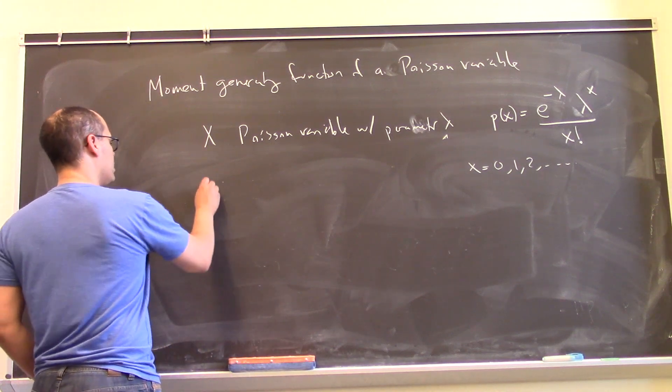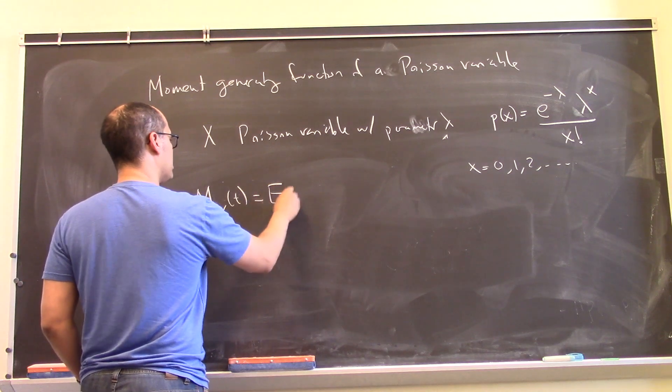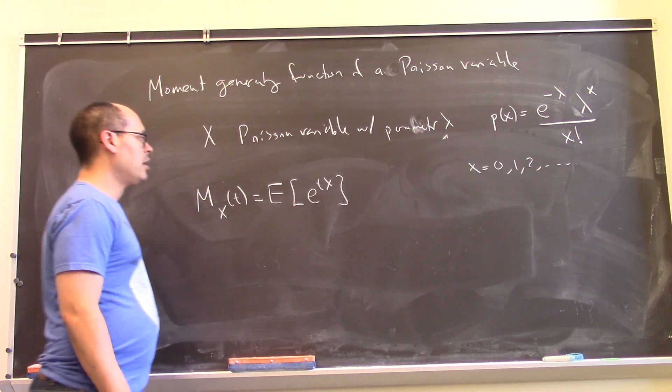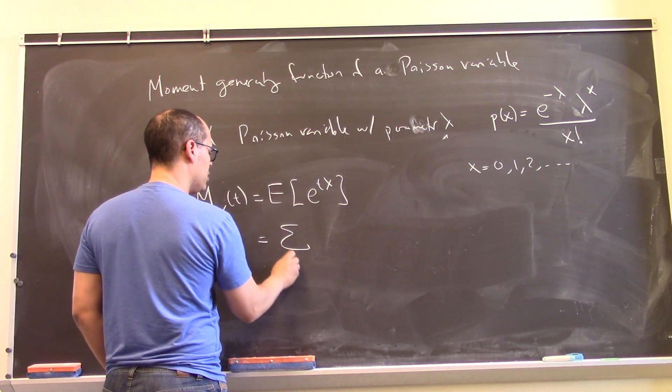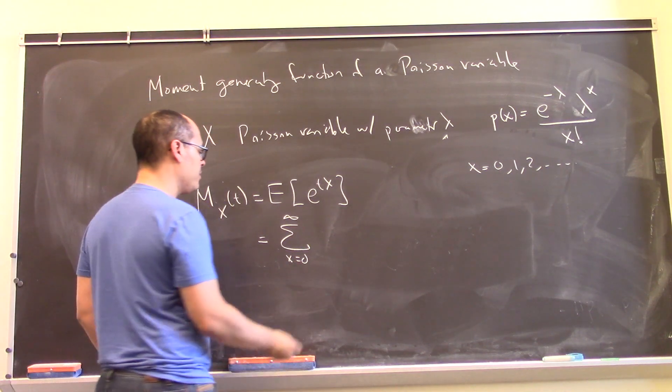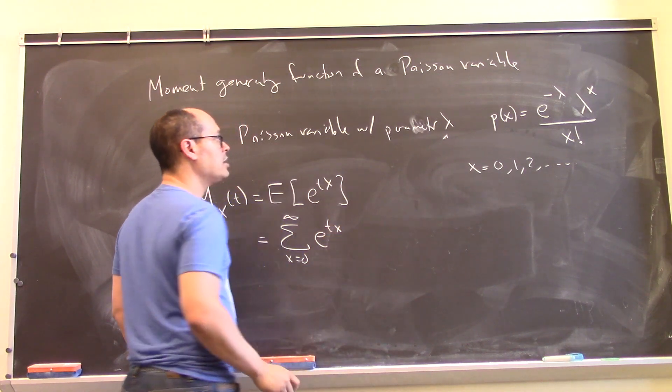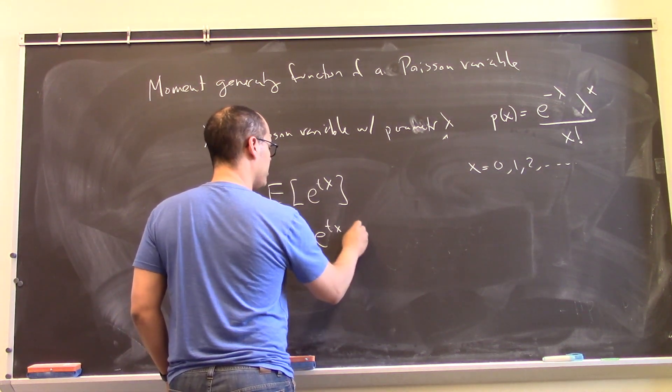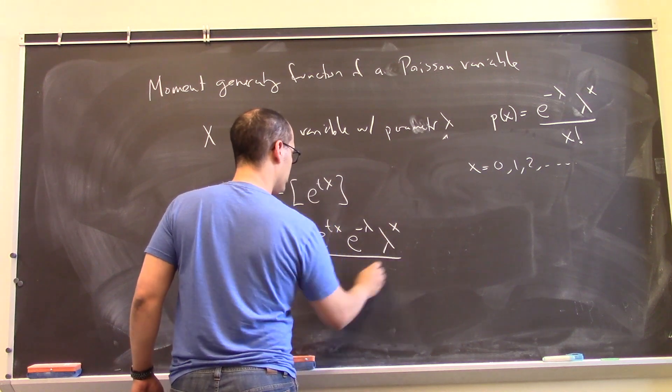Okay, and so we're going to calculate its moment generating function, which by definition is the expectation of e to the tx. And so concretely in our case, what we're going to do is we're going to consider all the possible values of our variable. We'll take the sum of this expression, e to the tx, times the probability mass function, which is e to the minus lambda, lambda to the x over x factorial.